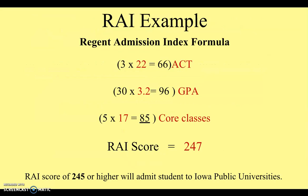We have an example here of what this looks like just to put it into practice. You can see this would be a student who earned a 22 on their ACT, has a 3.2 GPA, and has taken 17 core classes. From our experience, 17 is fairly average for how many core classes students take. They've multiplied those by the numbers that you need to, and their RAI score is a 247, which means they will be admitted to Iowa Public Universities. It needs to be higher than 245.